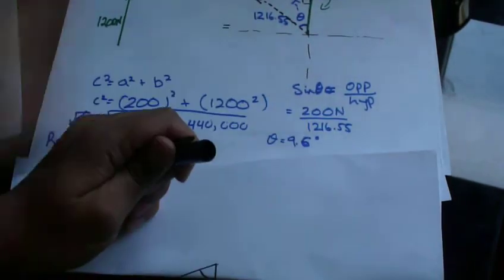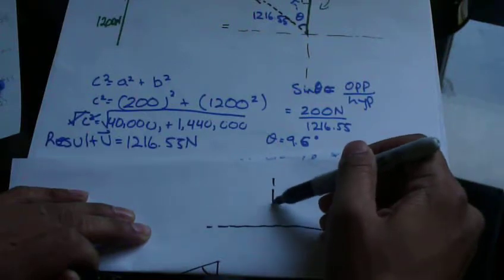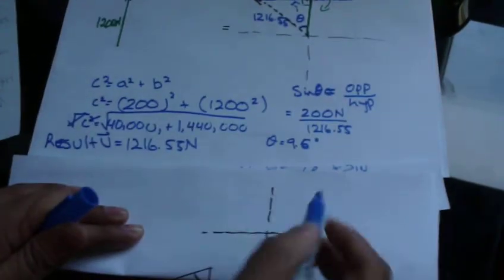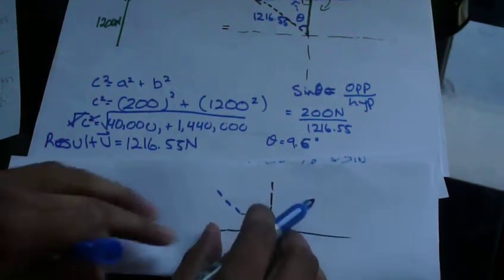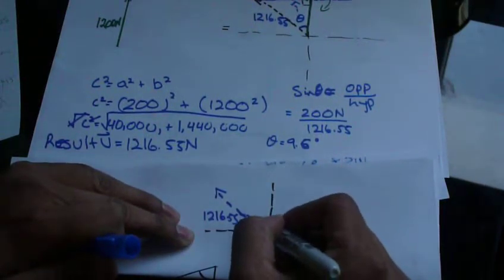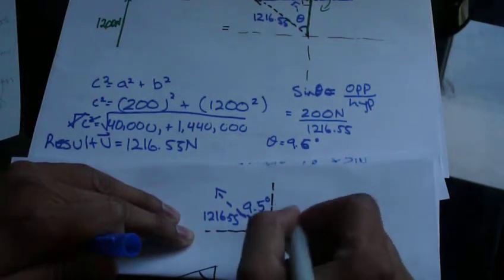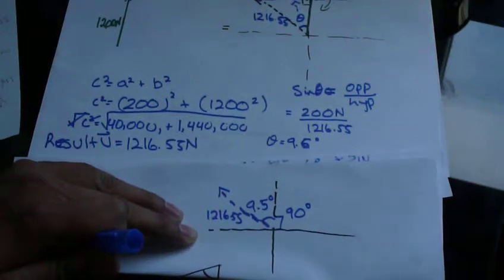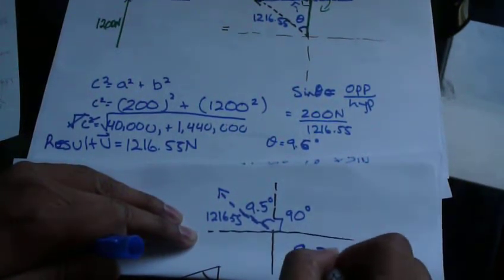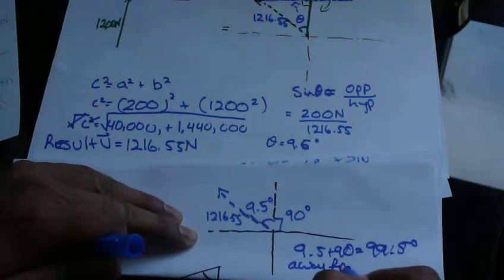So I think it's easier if we redraw it. So we have our xy coordinates. And let's use blue as the resultant vector. That is terribly drawn, I apologize. Of 1216.55. And we know this angle now is 9.5. And we know this angle is 90. So if we add these two, 9.5 plus 90 equals 99.5 degrees away from horizontal.